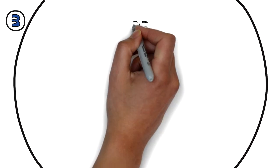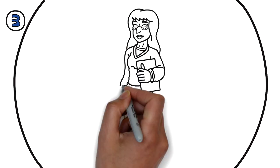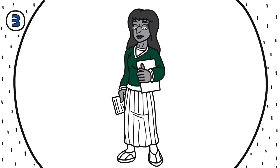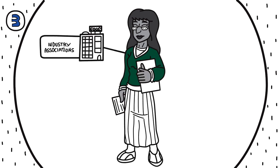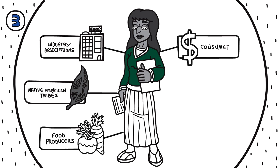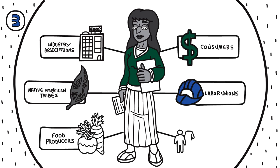Representatives serve on advisory committees to represent the views and perspectives of specific interest groups, such as industry associations, Native American tribes, food producers, consumers, labor unions, or the public at large.